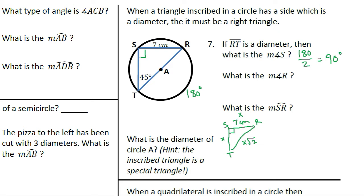I'm not sure whether the students who had this question looked at the guidance video or not, but let's take a look at number seven. When a triangle inscribed in a circle has a side which is a diameter, then it must be a right triangle.